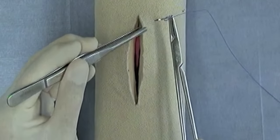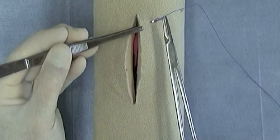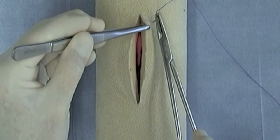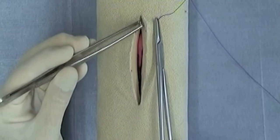You grasp the skin edge and you're taking a bite back or far from the skin edge. It's a full thickness bite through skin into the subcutaneous tissues.